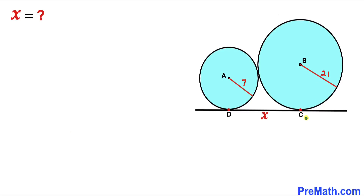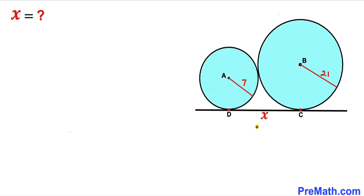In this video we have these two blue circles that are tangent to each other. The radius for the smaller circle is 7 units whereas the radius for the bigger circle is 21 units. A and B are their respective centers and D and C are their points of tangency. We are going to calculate the distance x between points D and C.